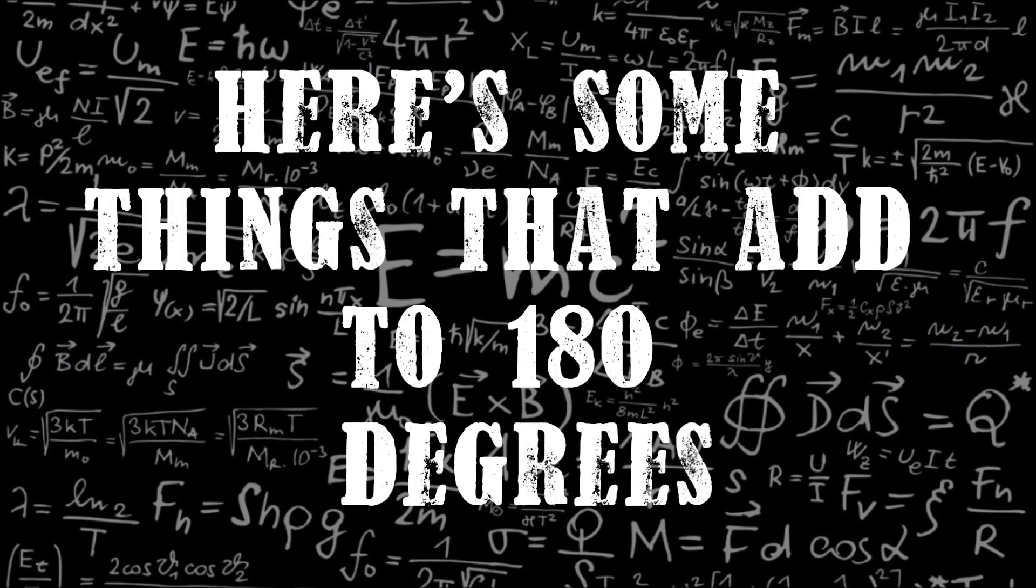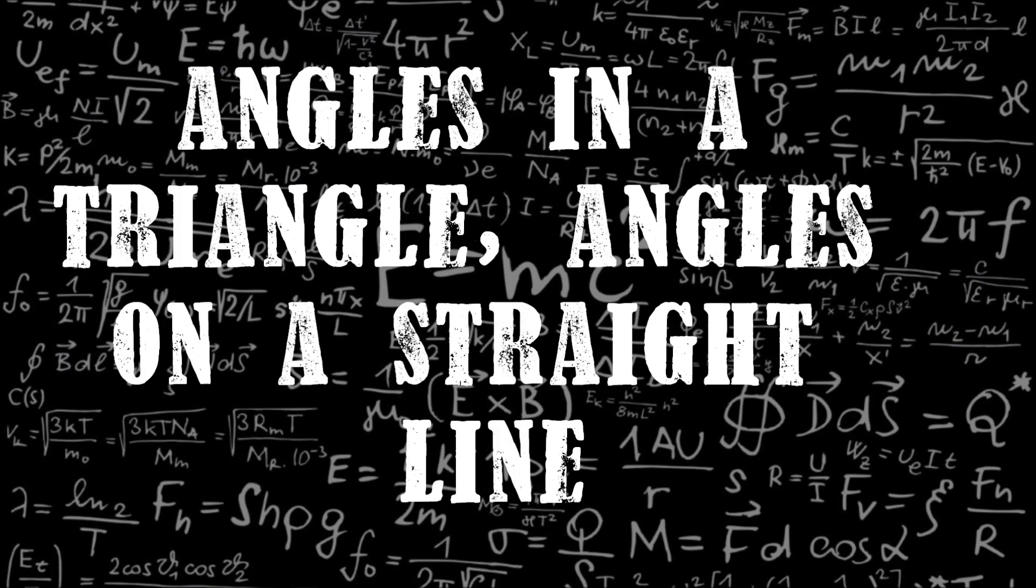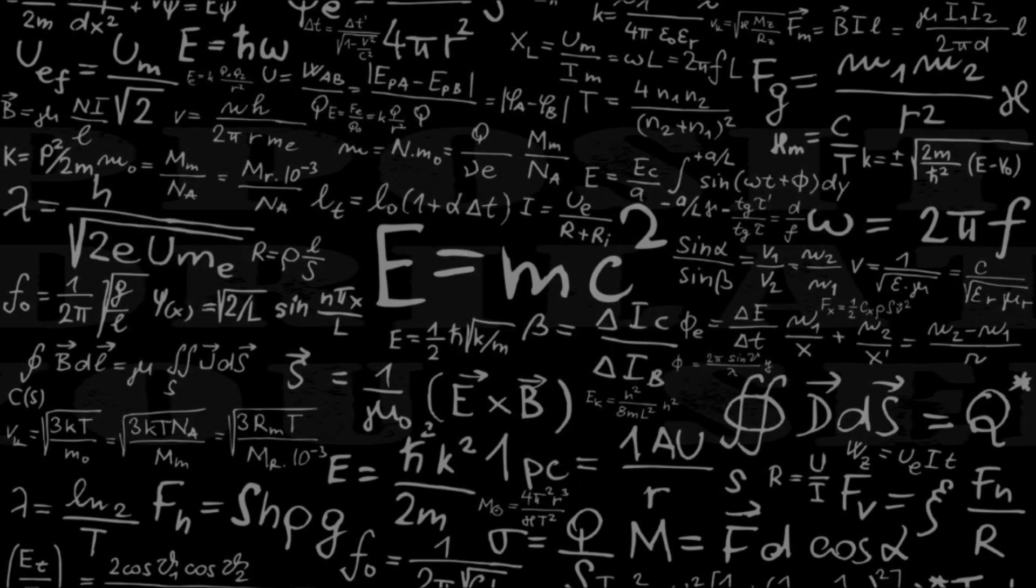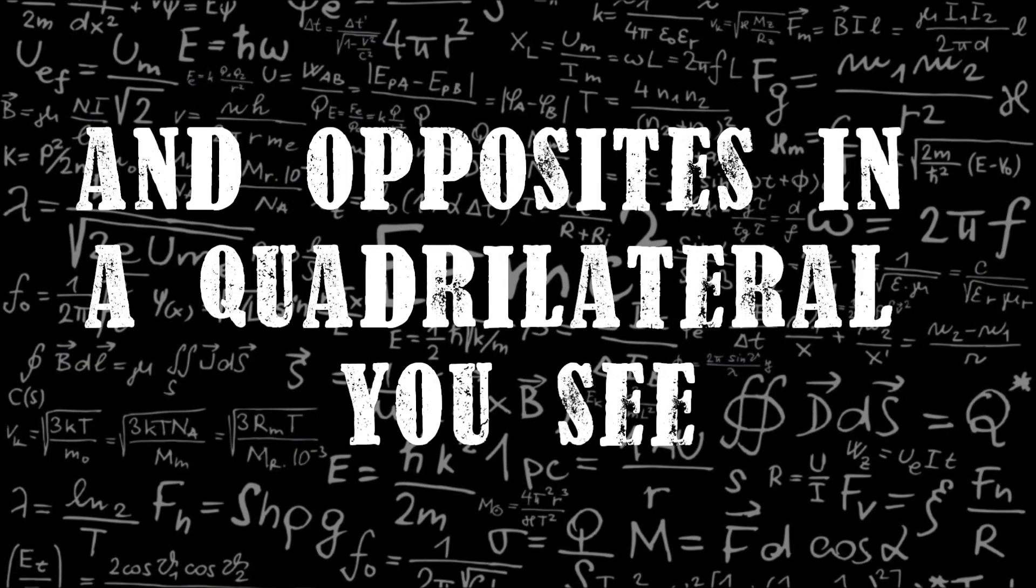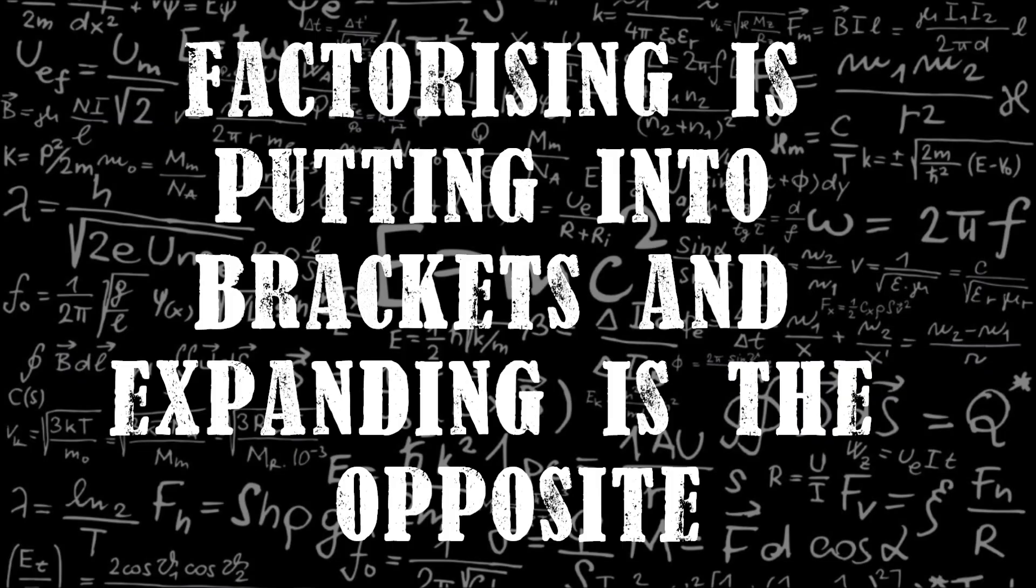Here's some things that add to 180 degrees: angles in a triangle, angles on a straight line, and opposite angles in a quadrilateral you see. Factorizing is putting into brackets and expanding is the opposite.